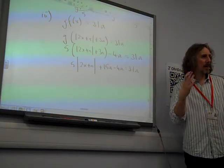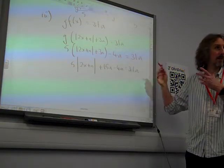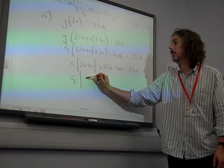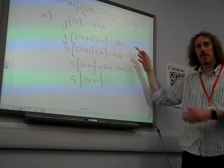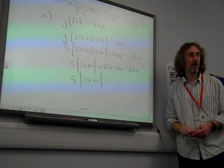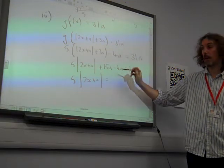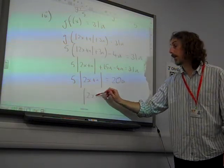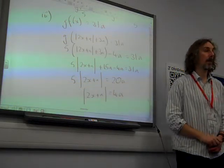There was lots of careless bits going on, like people missing the 15a, people losing an a somewhere along the way, which meant that things don't kind of balance out as nicely. 5 modulus of 2x plus a. Now, if I take all of these terms to the other side, I think, well, 31a plus 4a is 35a. Take away the 15 gives me 20a. So I've got the modulus of 2x plus a is 4a, once I've divided through by my 5.